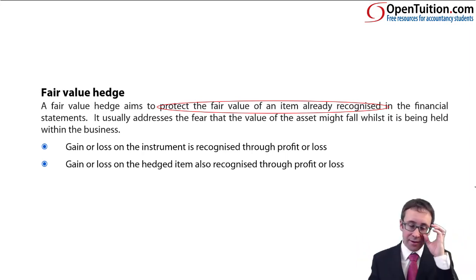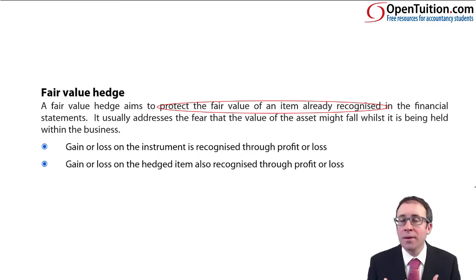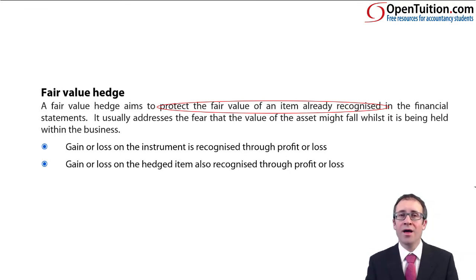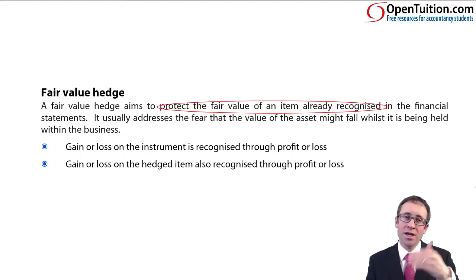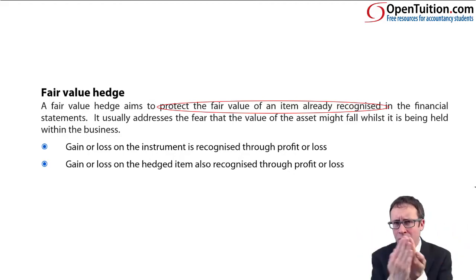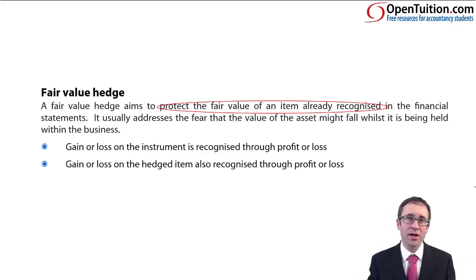Seems fair enough. The accounting treatment is much simpler and not as complex as what you have with your cash flow hedge. Here, the gain or loss on the instrument — that being your derivative — goes through profit or loss. And then the fair value change on the items, the change in value of the asset or the liability, the gain or loss goes through profit or loss as well. So hopefully if it's perfectly effective, the gain or loss will equally offset each other and you'll have a fixed price.